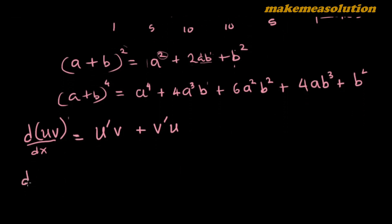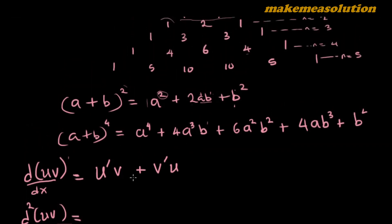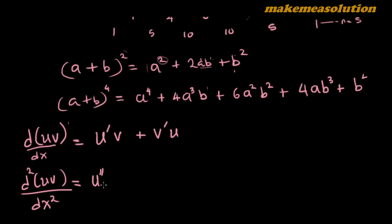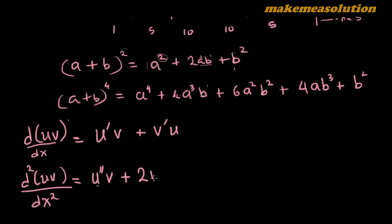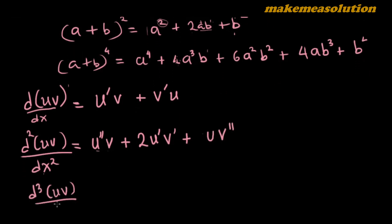For the second derivative d²(uv)/dx², differentiating the product two times, following Pascal's triangle: we differentiate u twice and keep v, giving u''v; then the Pascal coefficient 2 appears, giving 2u'v'; and finally u is kept as-is while v is differentiated twice, giving uv''.